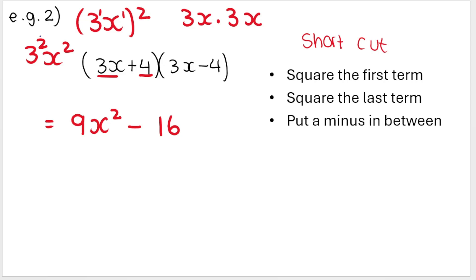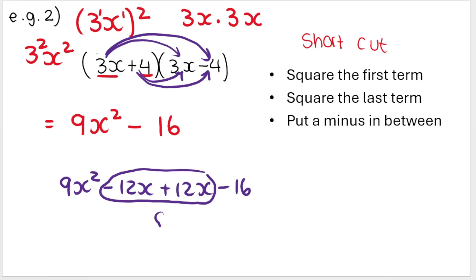And if you want to check yourself, you can do the normal FOIL method like this, where everything in the first bracket is multiplied by everything in the second bracket. You'll get that. And as you can see, these middle terms disappear. Negative 12 plus 12 is zero. And you're left with what the shortcut method gives us.